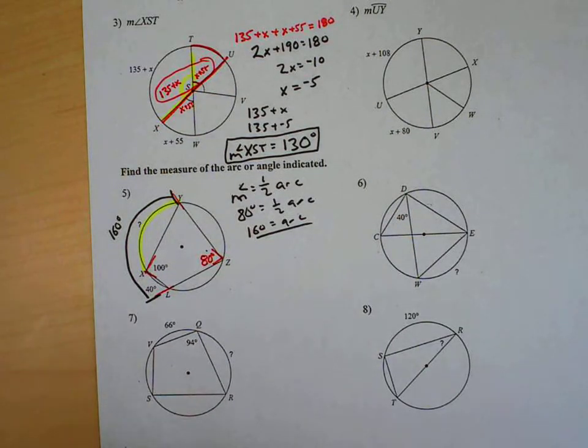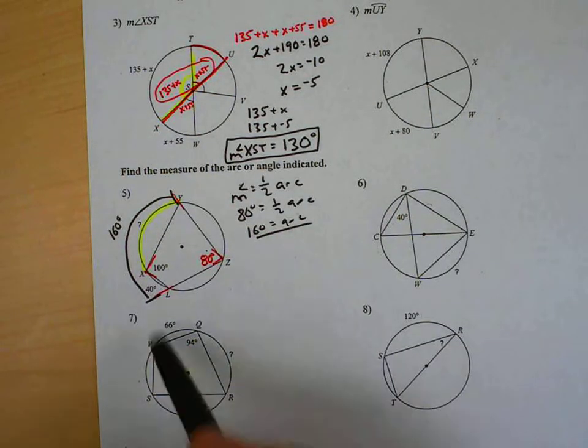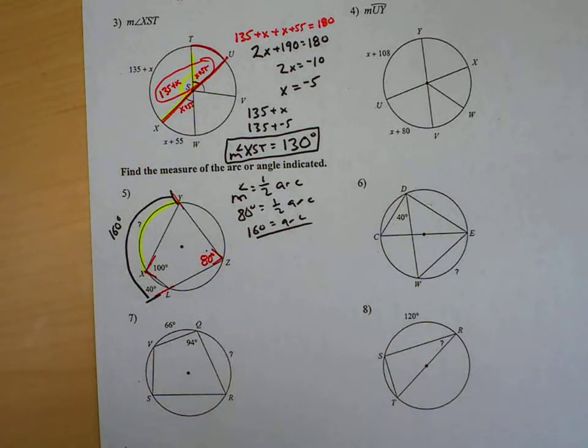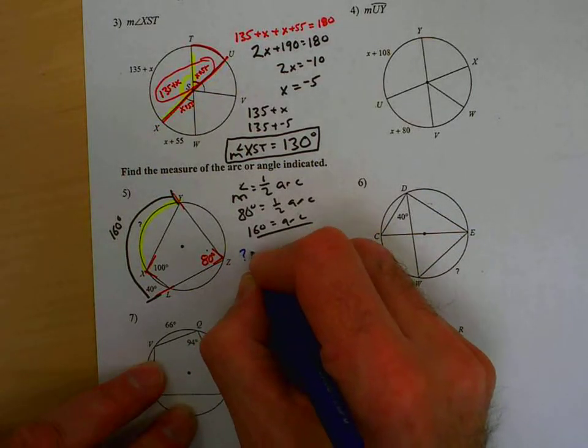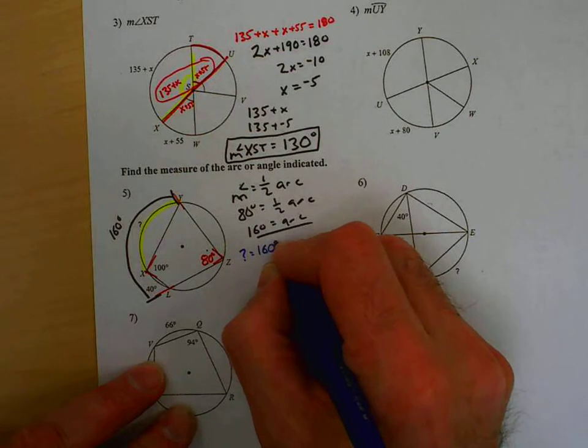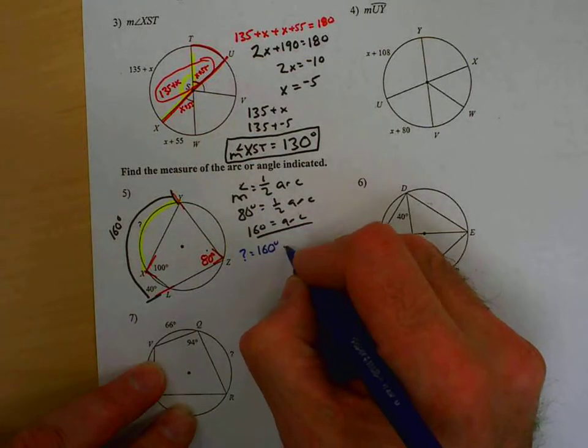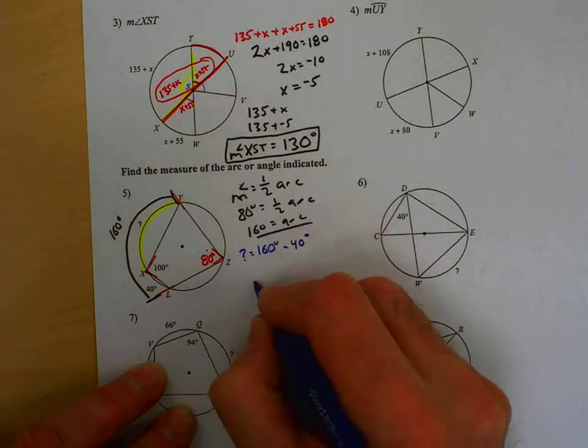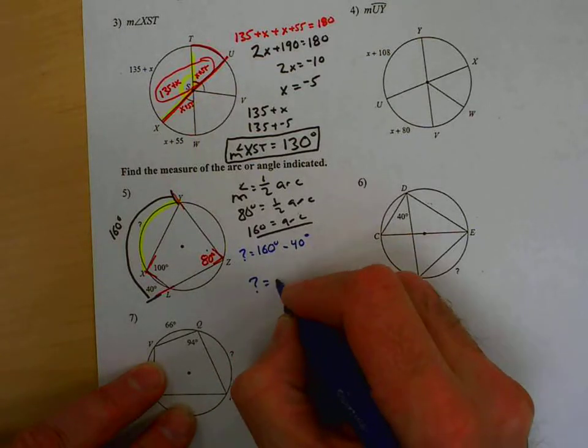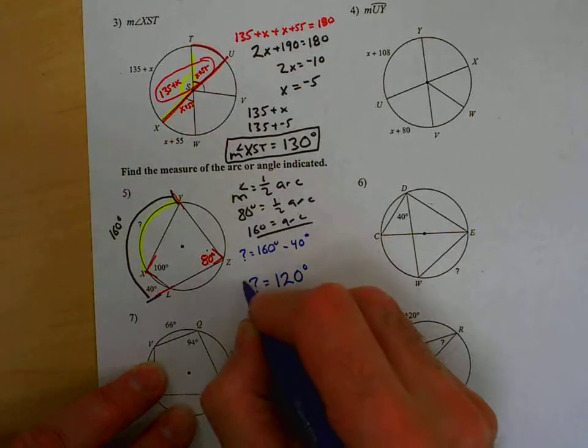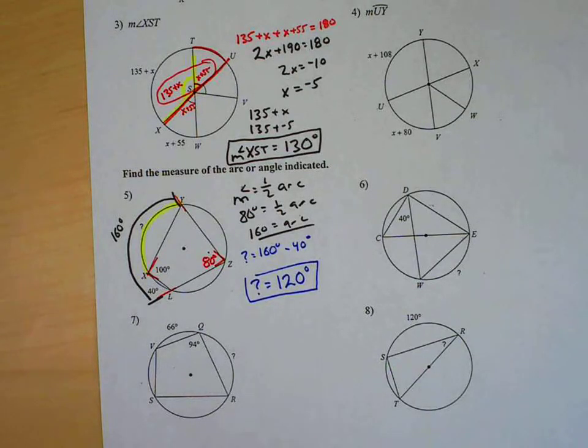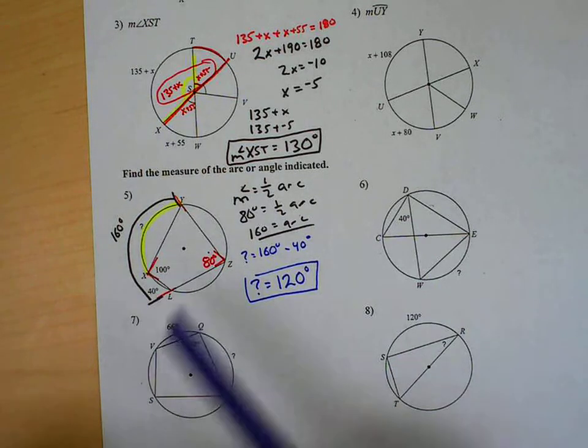Once I have that, now the rest of the arc is 160 minus 40. 160 minus this 40 has to equal the question mark. So, in the end, the question mark will equal 160 minus the 40. So, question mark equals 120 degrees. And there's other ways to do that problem, but that, I think, is the most direct.